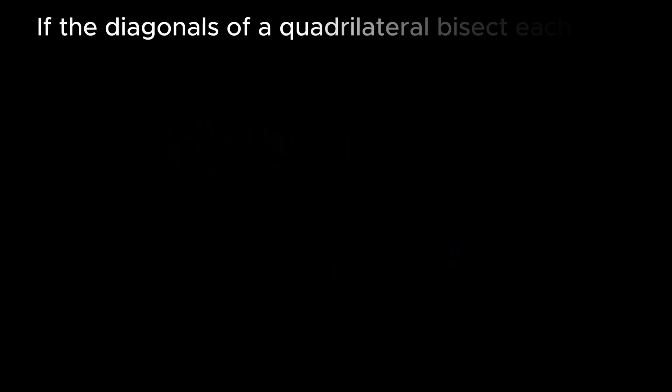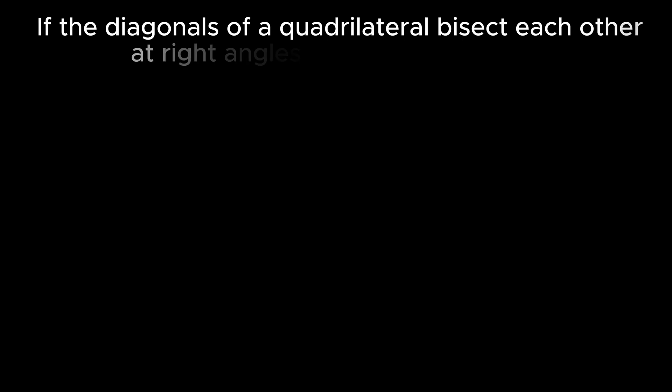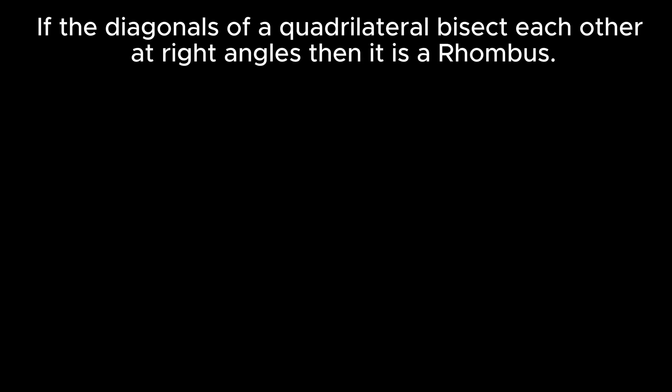The problem states that if the diagonals of a quadrilateral bisect each other at right angles, then the given quadrilateral is a rhombus.